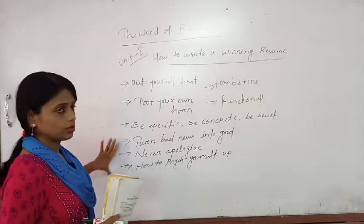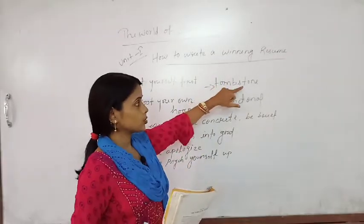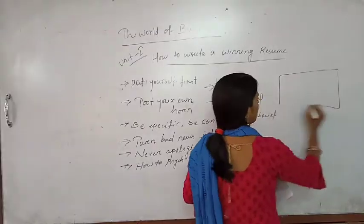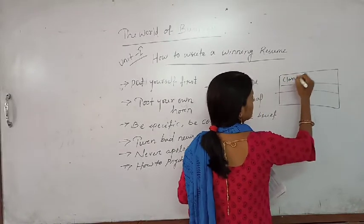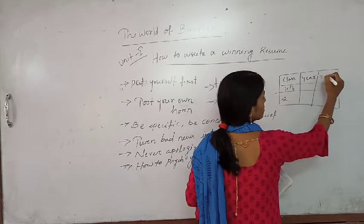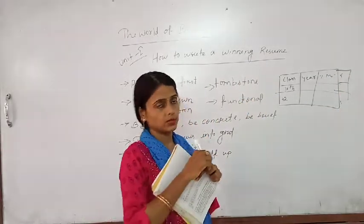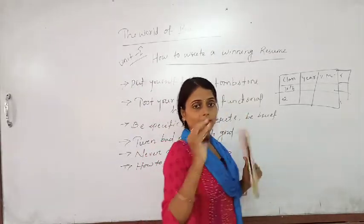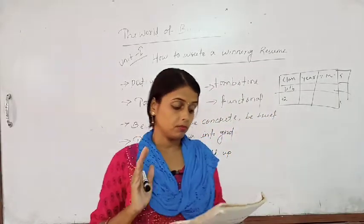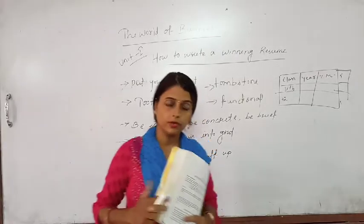To summarize, these are the points to focus on before writing your resume. There are two types: the tombstone method — the old box-style format listing educational qualifications year by year with percentages — and the functional method, which is the live, attractive one more likely to get you an interview. Try to read the chapter, and if you have any doubts, you can ask. Thank you and have a nice time.